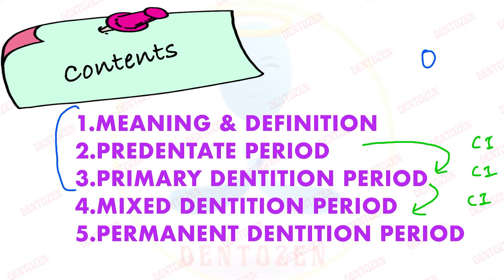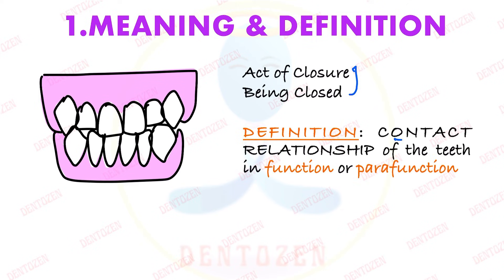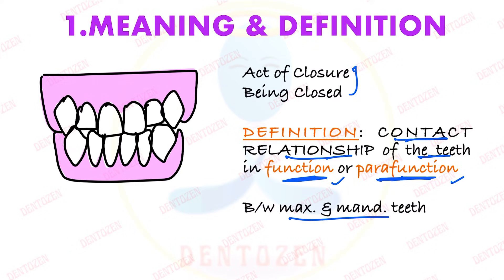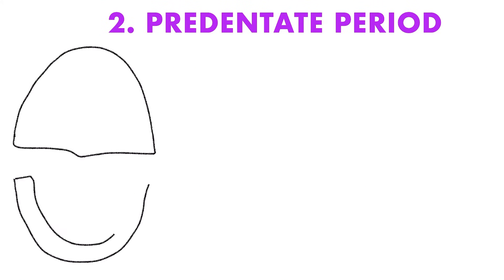The simplest meaning of occlusion is the act of closure or being closed when teeth contact. The definition is: it is the contact relationship of the teeth in function or para-function. The modern concept is an integrated concept involving not only teeth but also the temporomandibular joint and muscles of mastication. It is not a static concept — teeth contact not only during rest but also during various movements, making occlusion a dynamic concept.